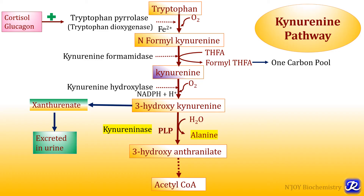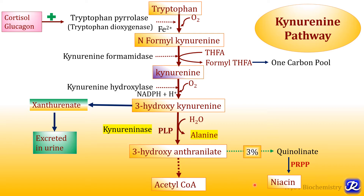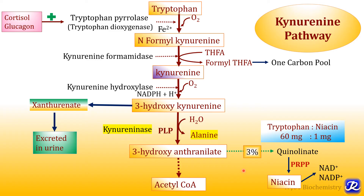Now let's see how niacin is synthesized from tryptophan. When 3-hydroxyanthranylate is formed during oxidation of tryptophan, most of it is diverted to formation of acetyl-CoA, but about 3% is diverted to formation of quinolinate. This quinolinate is further utilized for synthesis of niacin coenzymes like NAD+ and NADP+ with the help of PRPP (phosphoribosyl pyrophosphate). From tryptophan we don't get niacin directly; we get it in the form of NAD+ and NADP+. Half of the body's requirement of niacin is provided by tryptophan, and 60 milligrams of tryptophan is required to synthesize 1 milligram of niacin.